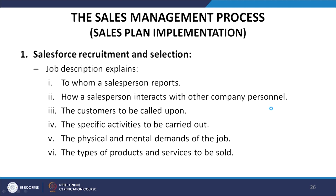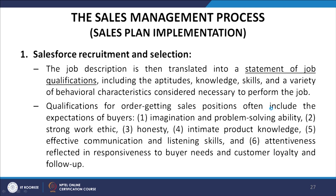The type of products and services to be sold is also included. The job description is then translated into a statement of job qualifications, including the aptitudes, knowledge, skills, and behavioral characteristics considered necessary to perform the job. Qualifications for order-getting sales positions often include: imagination and problem-solving ability, strong work ethic, honesty, intimate product knowledge, effective communication and listening skills, and attentiveness reflected in responsiveness to buyers' needs and customer loyalty and follow-up.